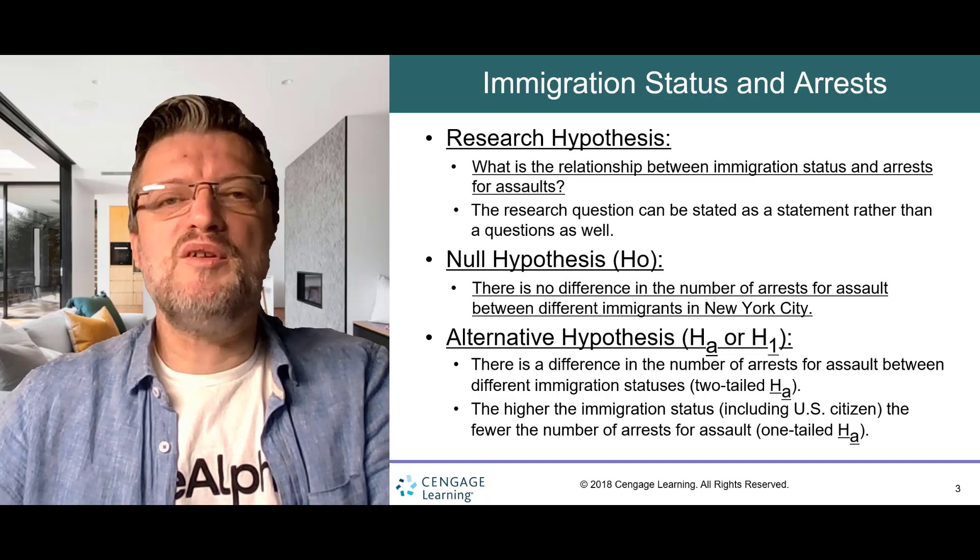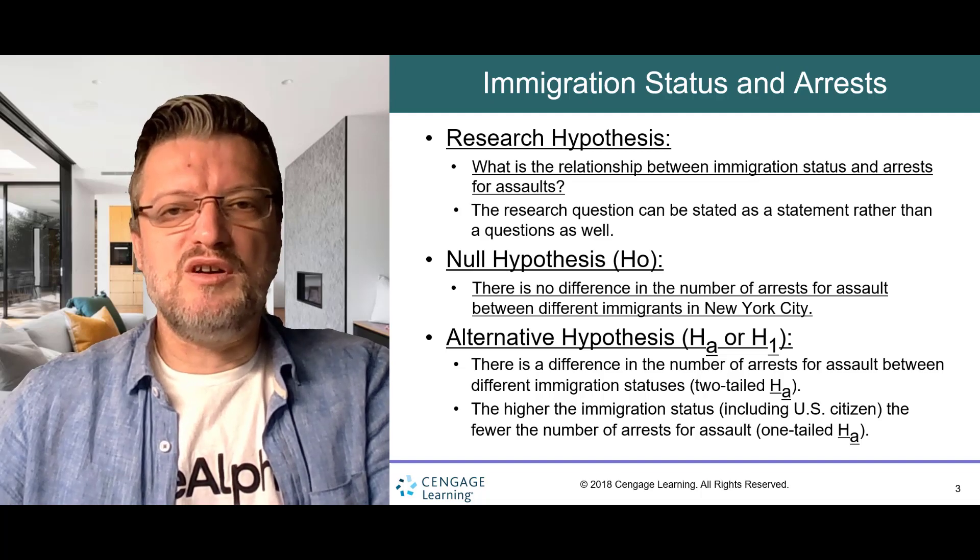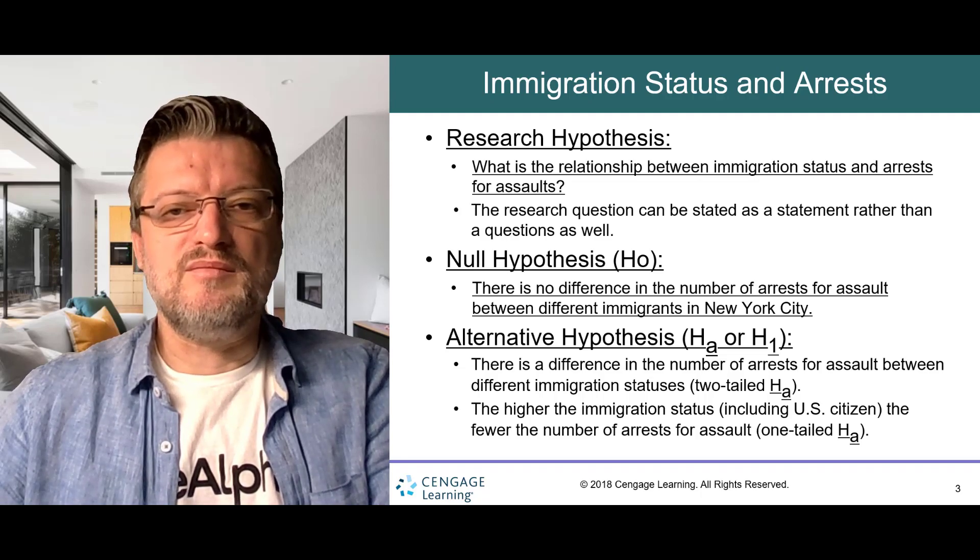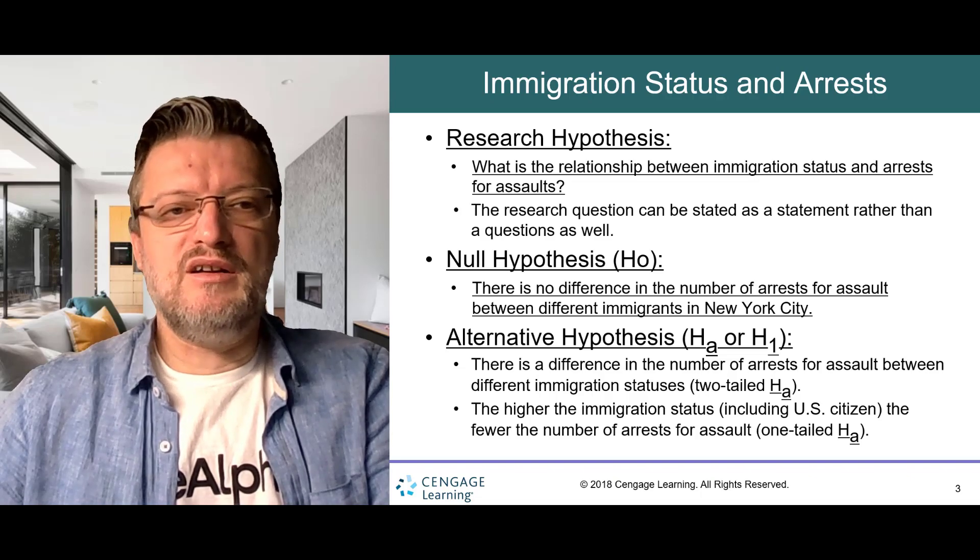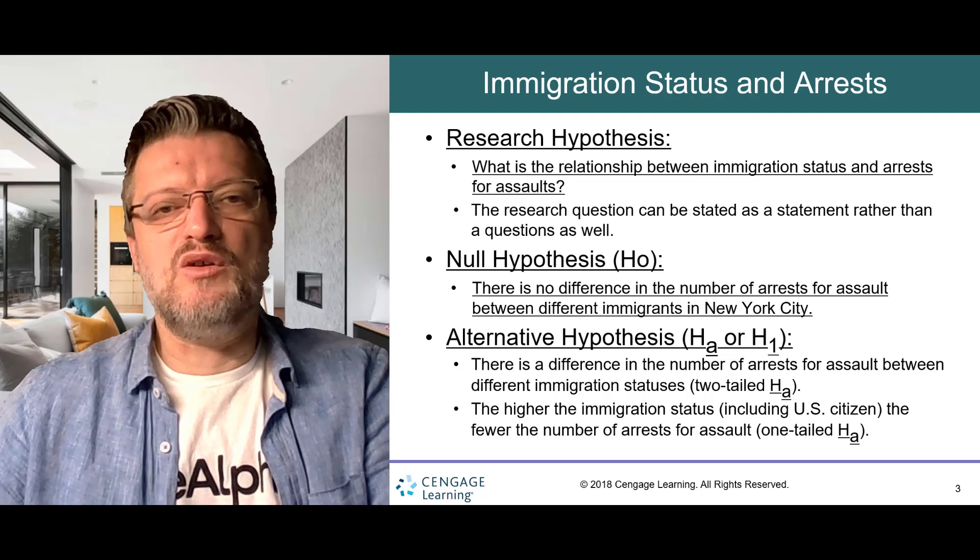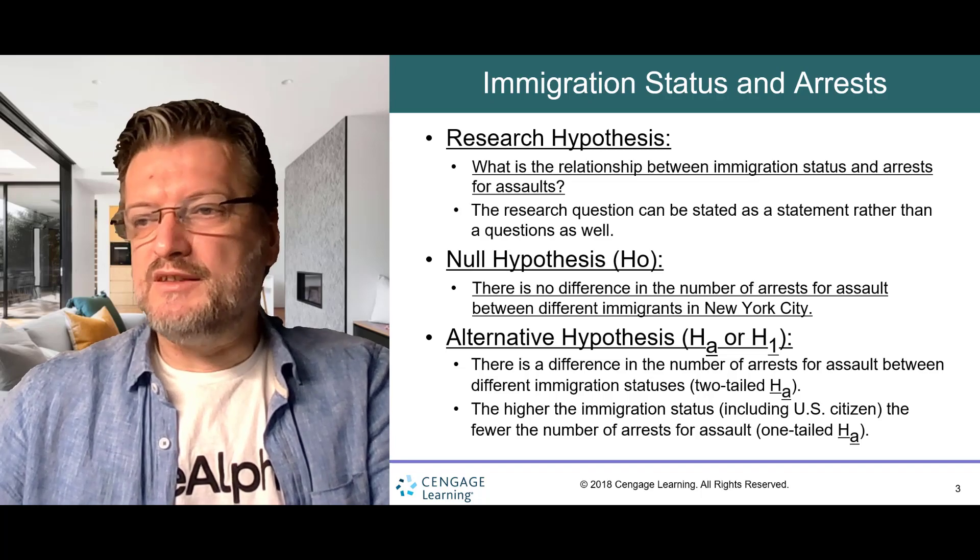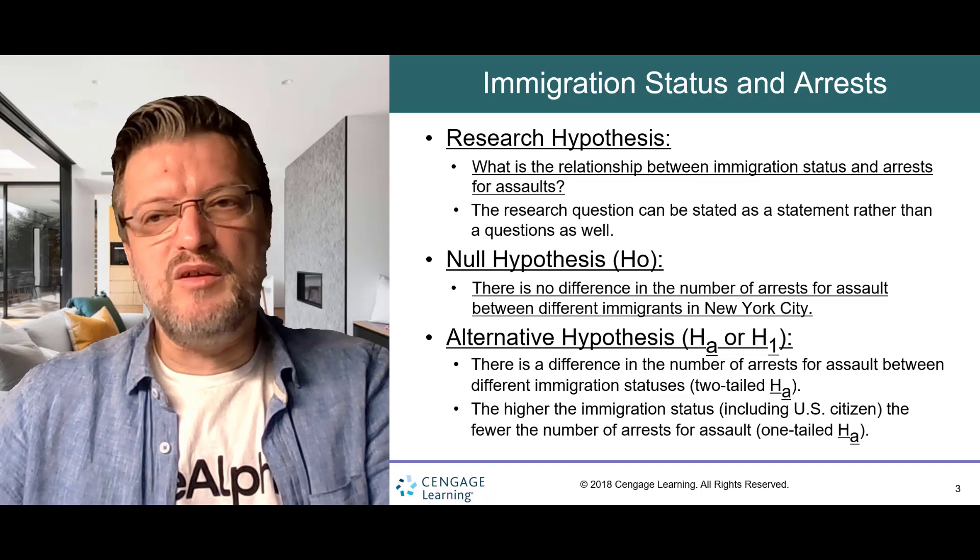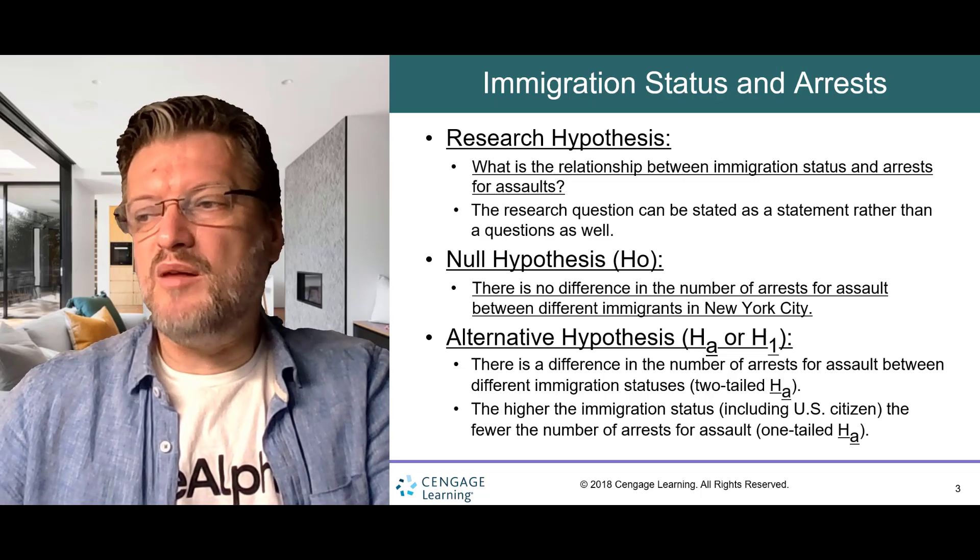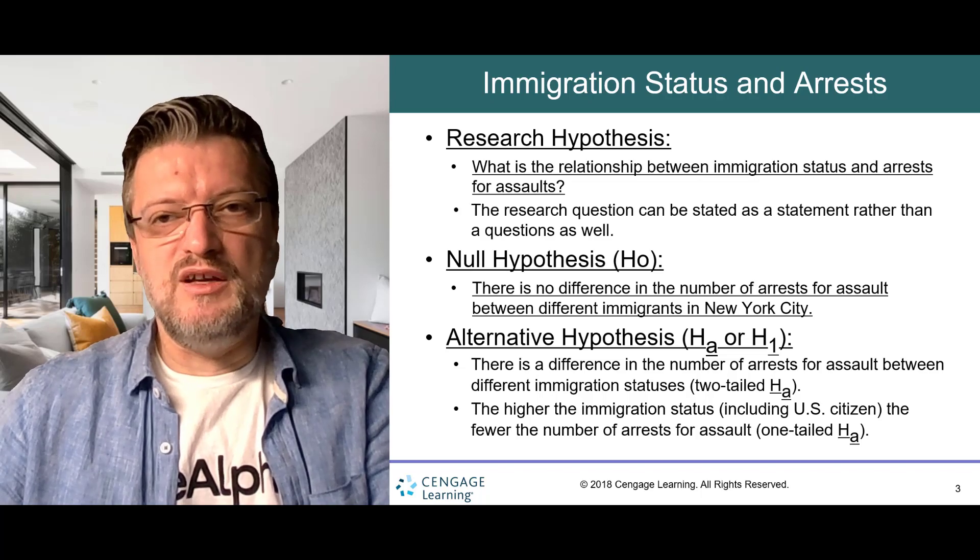The alternative hypothesis is the opposite of null and generally states that there is a relationship, an association, or a difference in the observed relationship. This means that if the relationship was observed, it may be positive or negative between the variables. This is called a two-tailed alternative hypothesis, and it is preferred over the one-tailed alternative hypothesis, which states simply that one variable is higher or lower. Here I present a two-tailed and one-tailed alternative hypothesis. The two-tailed is there is a difference in the number of arrests for assault between different immigration statuses. The one-tailed would be the higher the immigration status, including a US citizen, the fewer the number of arrests for assault. As you can see, this shows that there is one direction in the alternative hypothesis.